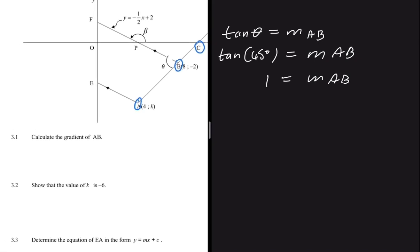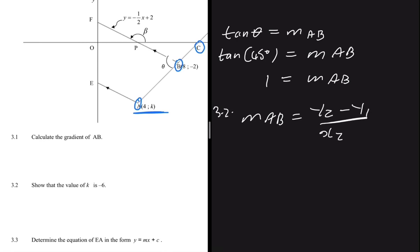Question 3.2 says show that the value of k is minus 6. K is the y-coordinate of point A. Since we have the gradient of AB, we can use the gradient formula to find k. For 3.2 we write: gradient of AB equals y2 minus y1 divided by x2 minus x1.